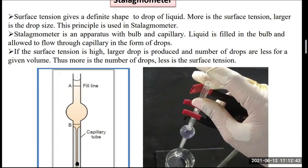Surface tension gives a definite shape to a drop of liquid. More surface tension means a larger drop size. If surface tension is high, the drop of the liquid will be large. This principle is used in the stalagmometer.